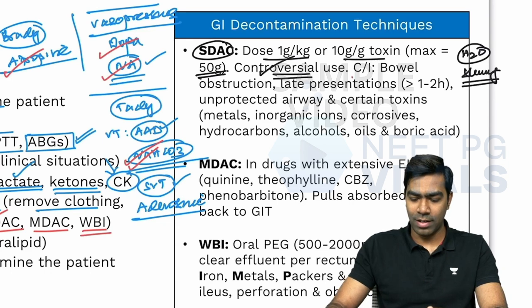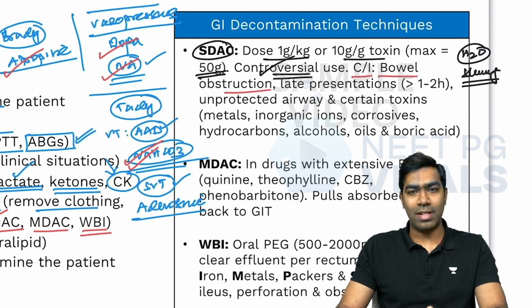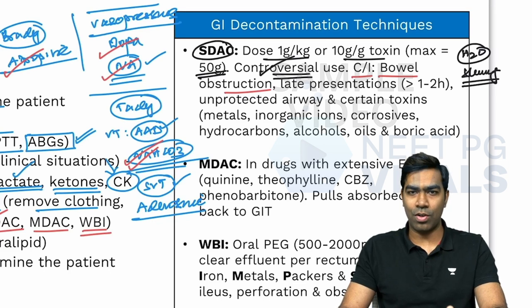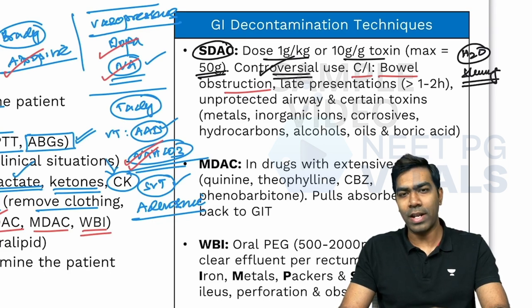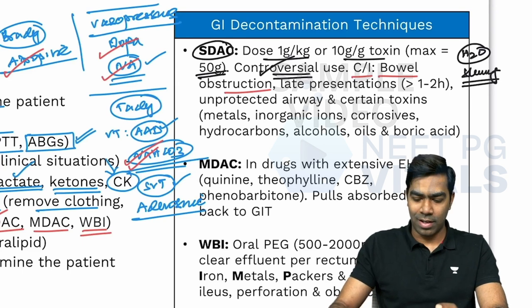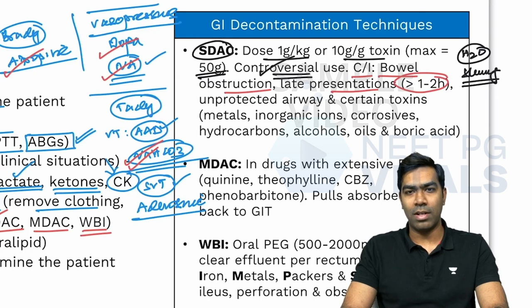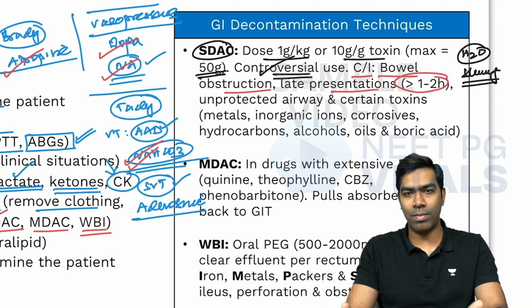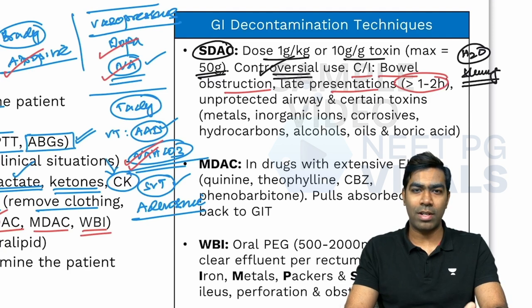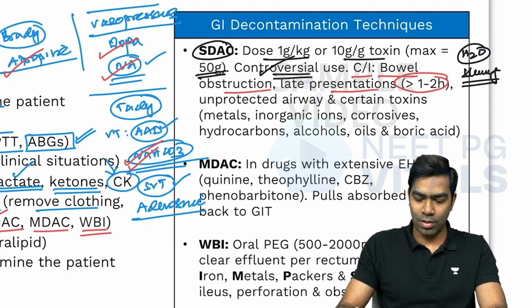Activated charcoal is contraindicated in suspected bowel obstruction. In late presentations — if the patient presents after one to two hours of toxin ingestion — it's better to avoid, because most toxin would already have been absorbed and giving activated charcoal would only increase risk of complications without benefit.